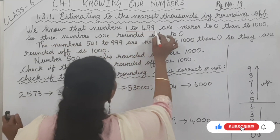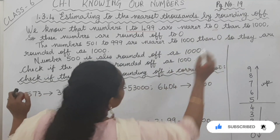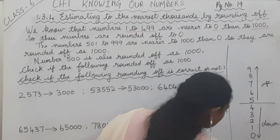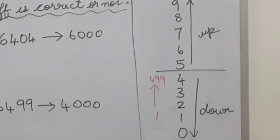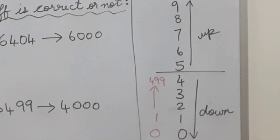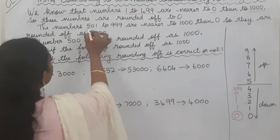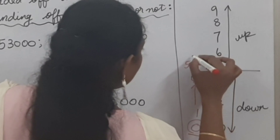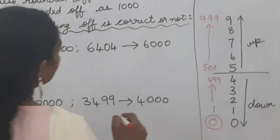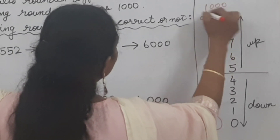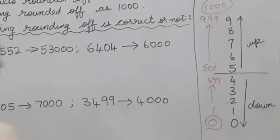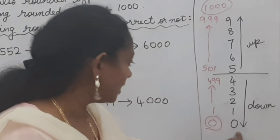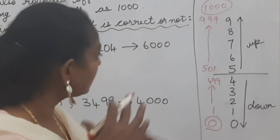We know that numbers 1 to 499 are nearer to zero than to one thousand. These numbers are rounded off to zero. The numbers 500 to 999 are nearer to one thousand than zero, so they are rounded off to one thousand.